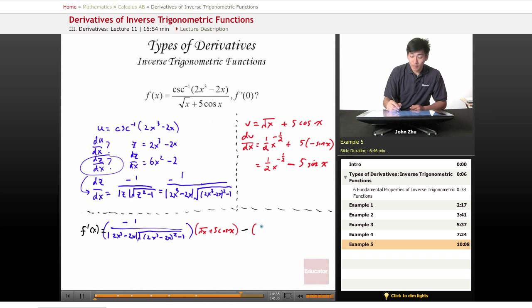minus the bottom term, derivative of the bottom term, 1 half x to the negative 1 half minus 5 sine of x times the top term,